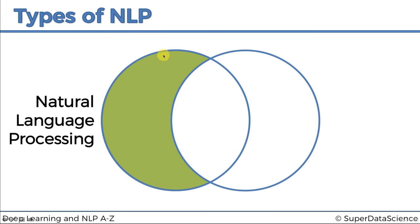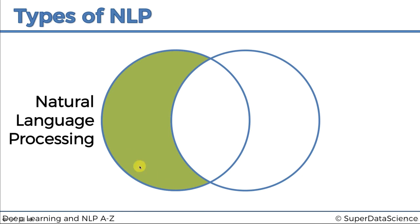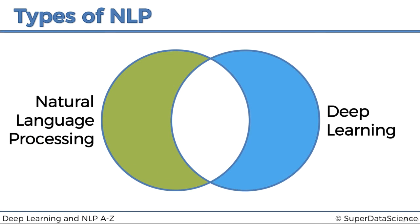The reason why we've called just this green part is because that's the non-overlapping part. So we know that anything in here is just natural language processing with disregard to this second circle. But natural language processing is indeed everything that is in this first circle. And then on the right we've got deep learning.